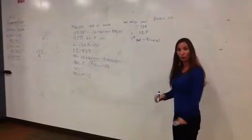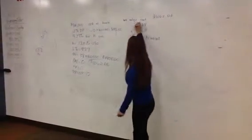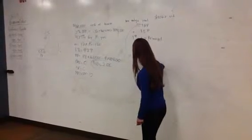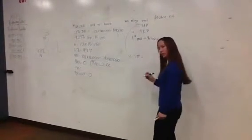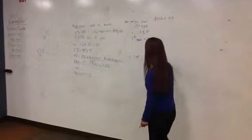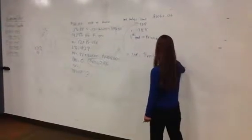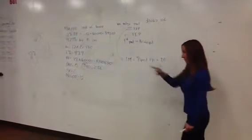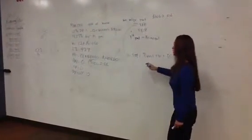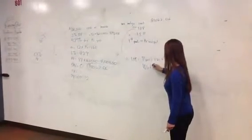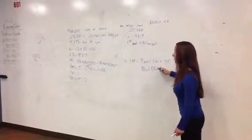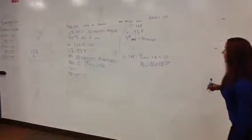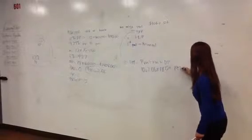And then the next thing they ask for is total amount paid. So, I'm going to come down here to work that total amount paid. And to do that, I'm going to take payment times N plus down payment. So, the payment that we had calculated in the TVM solver was $1,062.06. I figured out that that would be for 180 payments. And the down payment was $19,200.